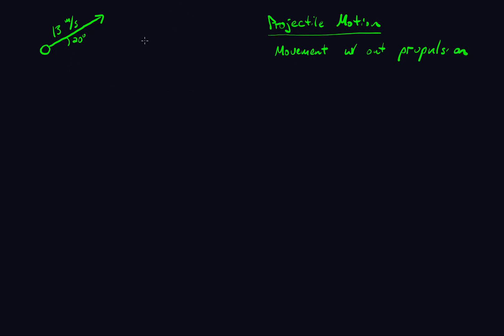So you throw a rock, you throw a ball — not a rocket. A bullet is a projectile once it leaves the gun. Projectile motion in general follows a parabolic path — it goes up and over and then hits the ground. We want to analyze this using vector components.